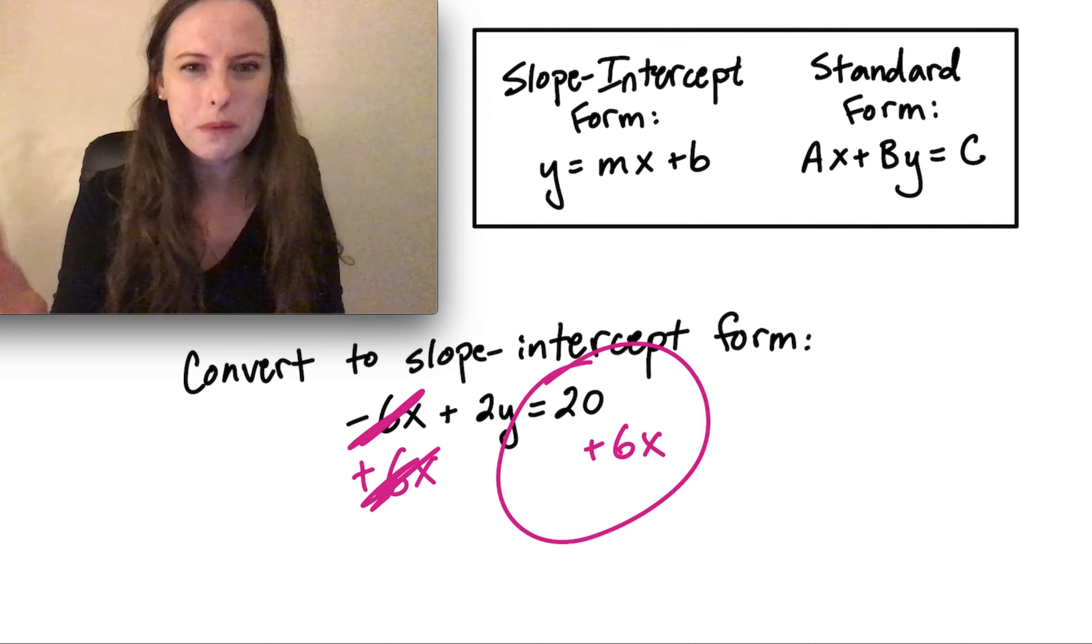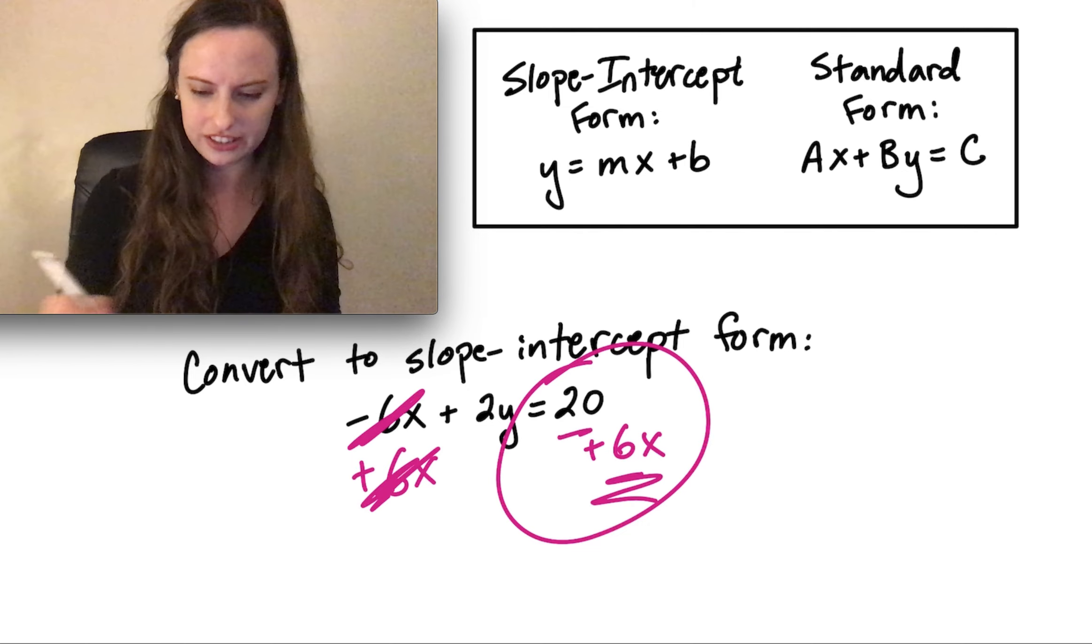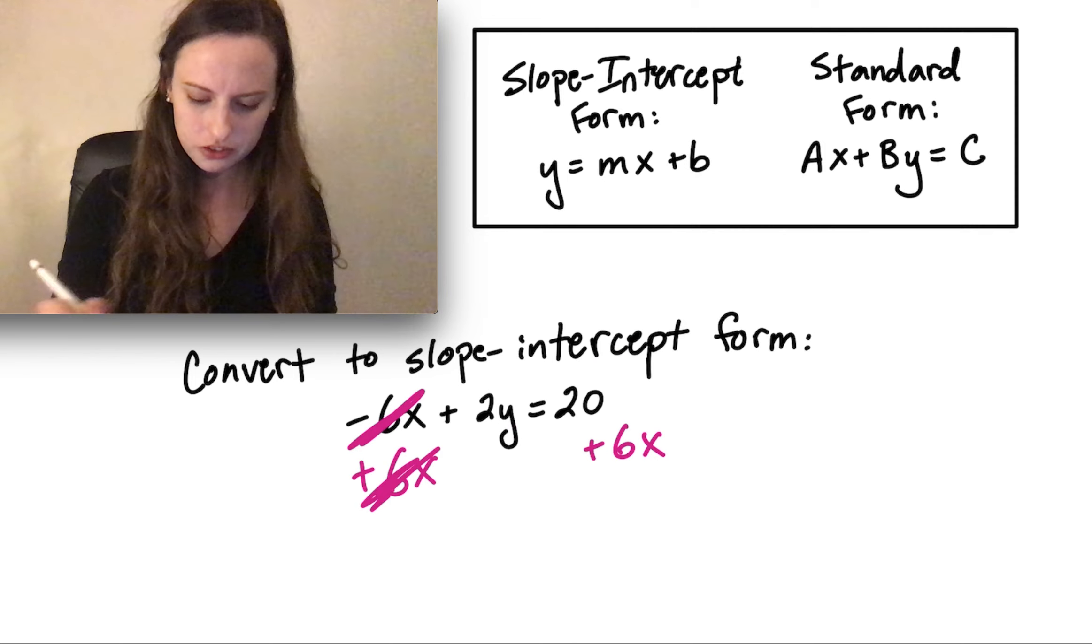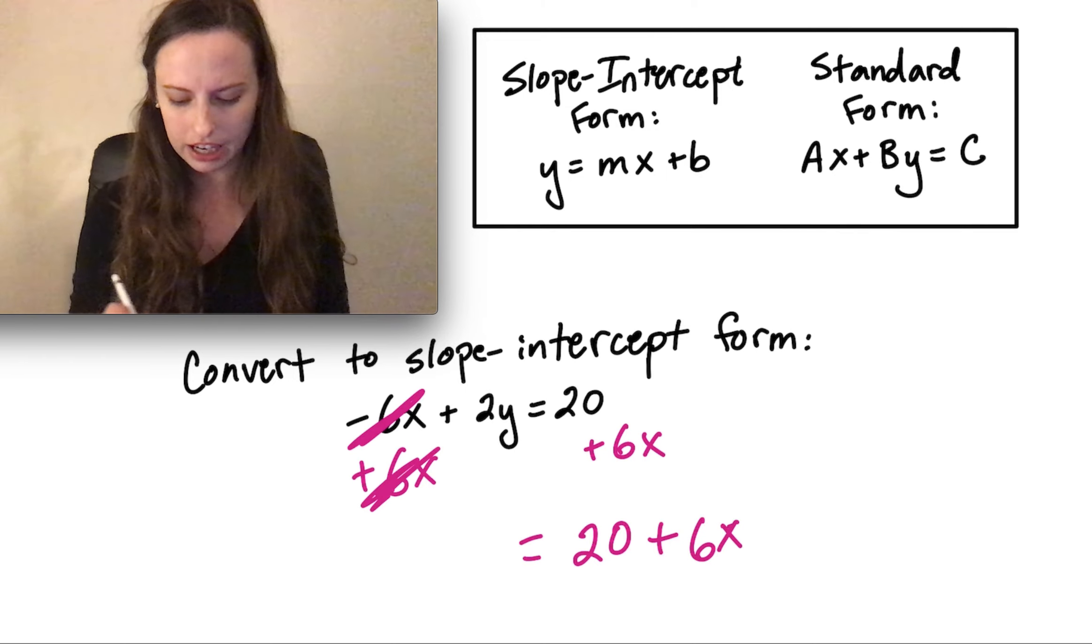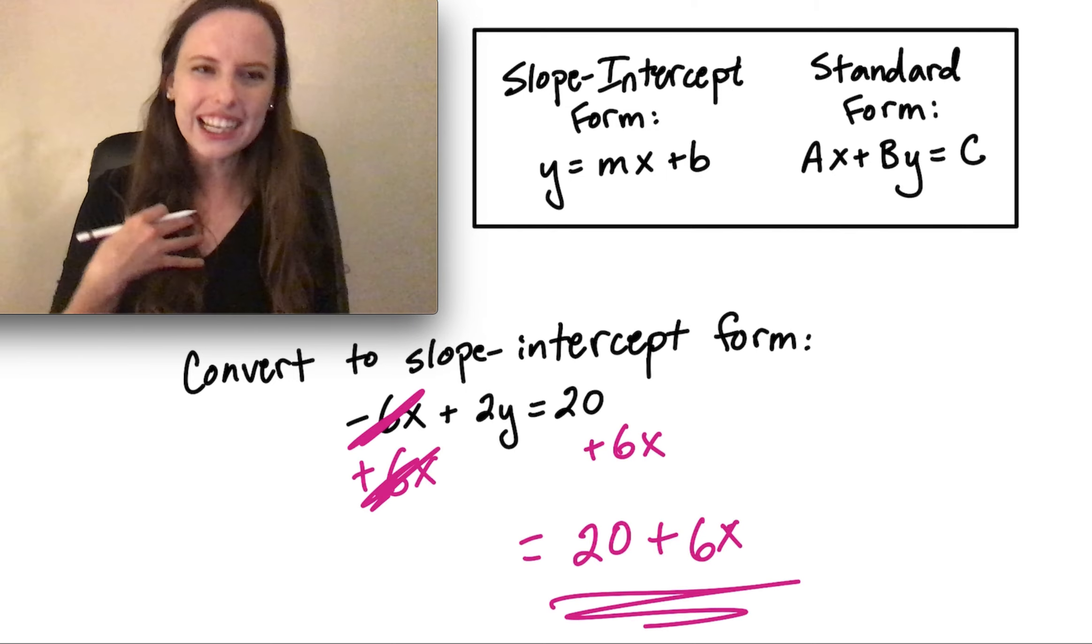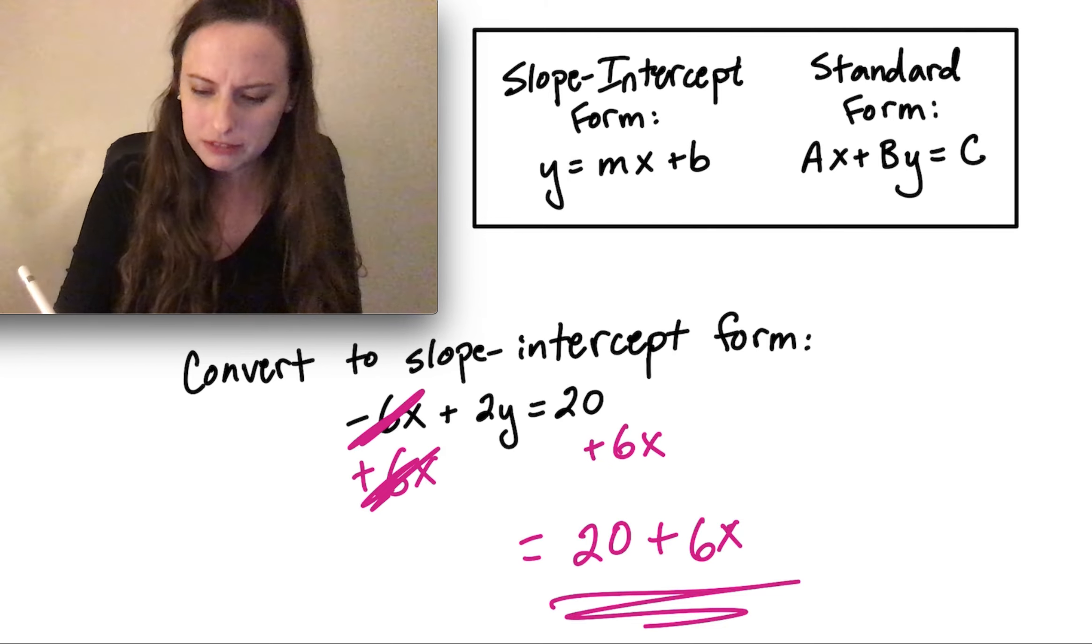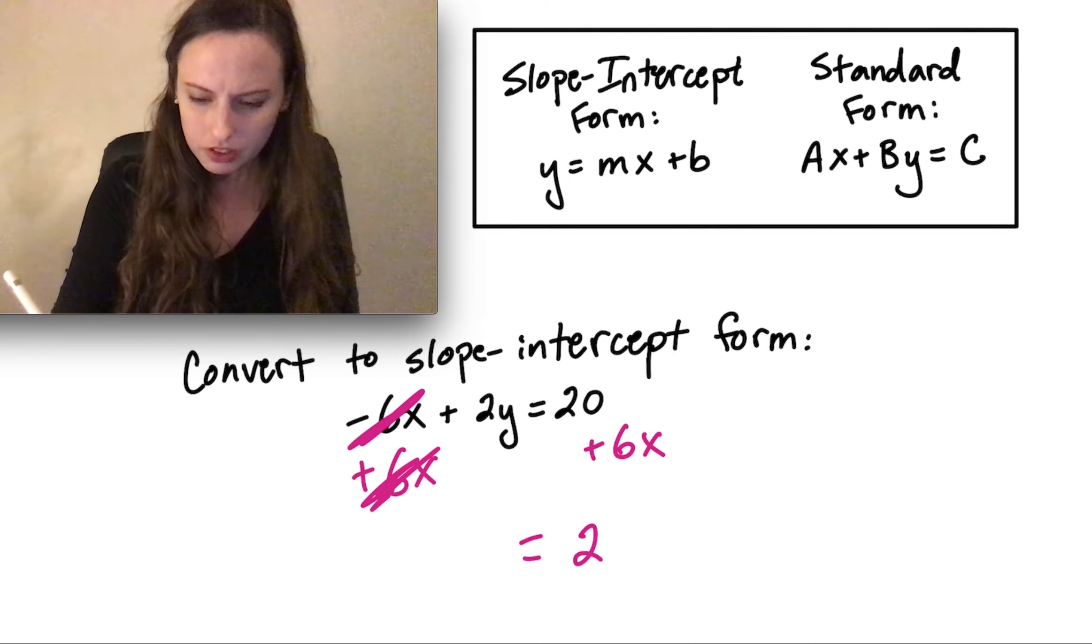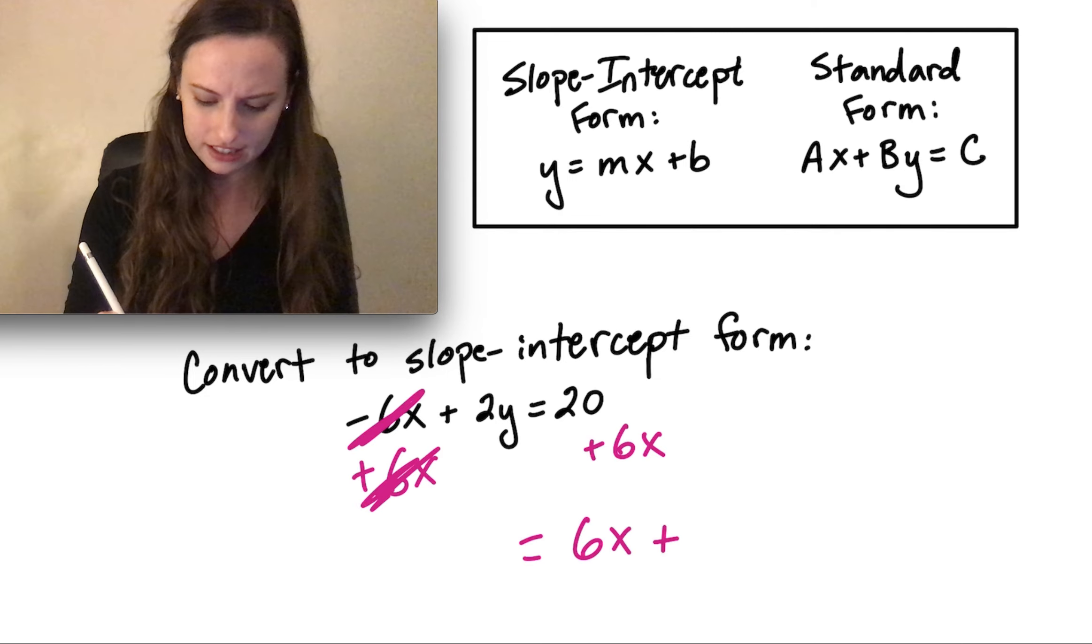Those two things don't combine. They're not like terms. 6x has an x in it, 20 is just a number. So we'll just write this as 20 plus 6x. This is perfectly fine, but I generally like to write the term with the x in it first. So I'm just going to reorder this and put 6x in front and then the 20 after that.